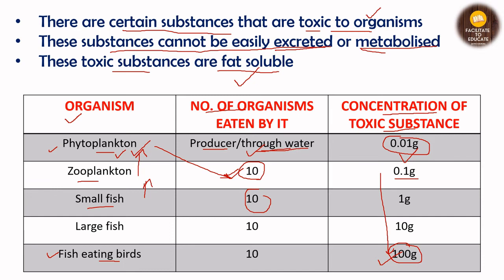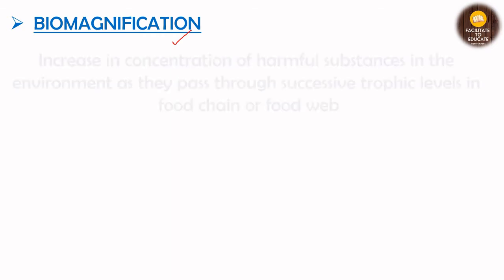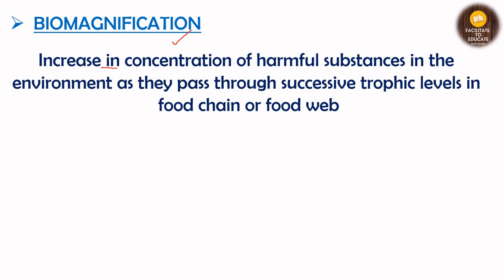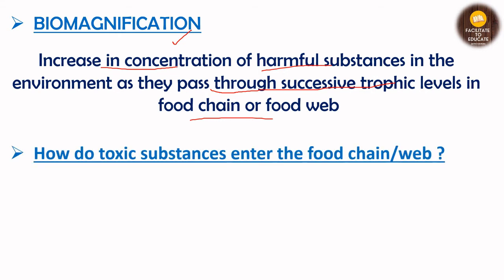Now for the definition: biomagnification is the increase in concentration of harmful substances in the environment as they pass through successive trophic levels in a food chain or food web. The concentration of the toxic substance increases as we move from the producer to the topmost carnivore — that is biomagnification.